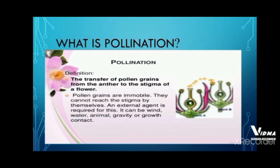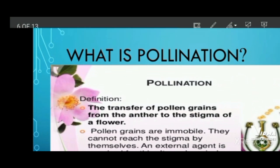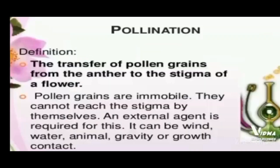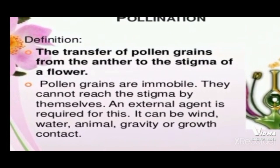Now we will talk about pollination. What is pollination? The transfer of pollen grains from the anther to the stigma — that is from the male reproductive part to the female reproductive part of the flower — is called pollination. There are two types: cross-pollination and self-pollination. Pollination can be done by two means: by insects and by wind.